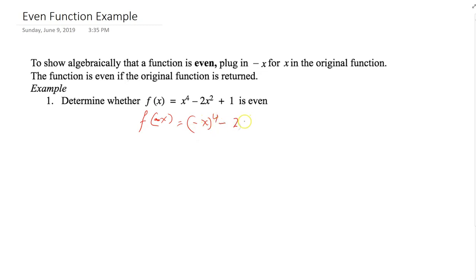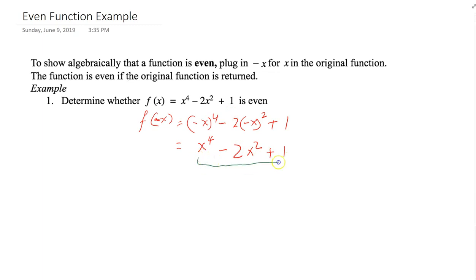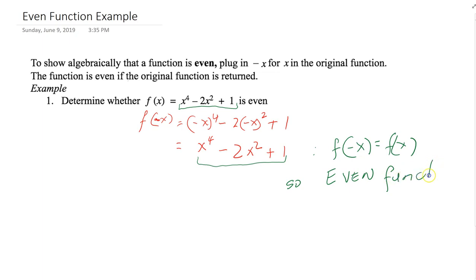We get f of negative x equals negative x to the fourth power minus 2 times negative x squared plus 1. Negative x to the fourth power equals x to the fourth power because negative times negative times negative times negative is positive. And negative x squared equals positive x squared, so we get x to the fourth minus 2x squared plus 1. This is the same as f of x, so f of negative x equals f of x — this is an even function.